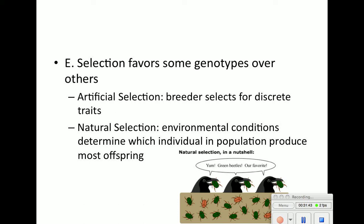The last evolutionary agent of change is selection — how selection favors some genotypes over others. There are two types: artificial selection, where breeders select for a certain trait they like, and natural selection, where environmental conditions select individuals in a population, resulting in those individuals producing more offspring. All dog breeds can be traced back to the wolf, and humans domesticated them through selective breeding.